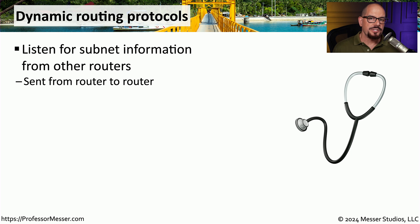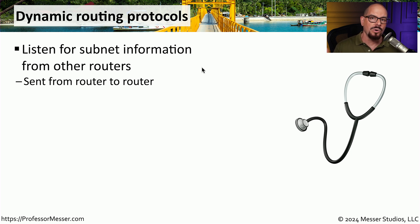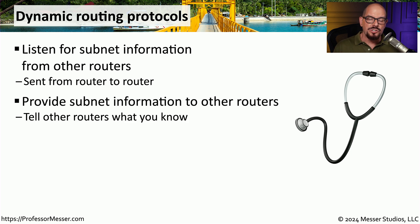Although it looks relatively straightforward to perform these dynamic routing updates, there's actually a lot of work that occurs behind the scenes. First, the router needs to listen to the traffic on the local subnet and see if there are other routers sending routing updates that it can use to build its own routing table. These updates are very often sent directly from router to router, either directly or with a multicast. Once a router builds its routing table, it needs to inform other routers of routes that it knows, so it will send its own multicast to nearby routers informing them of all the routes it knows.